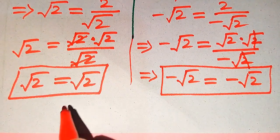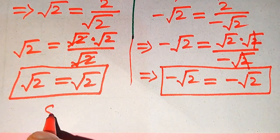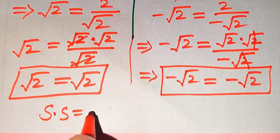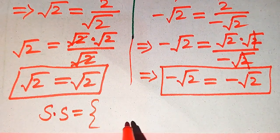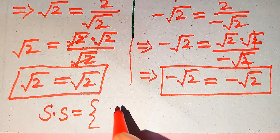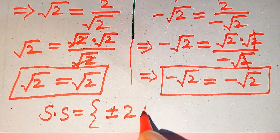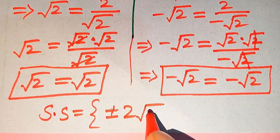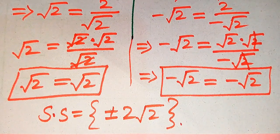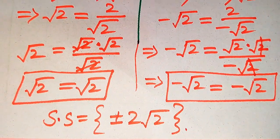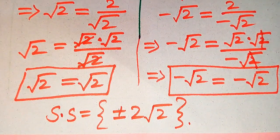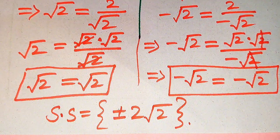Our final conclusion is that the solution set is plus or minus 2 times the square root of 2. This is our solution set and the final answer. Thank you so much for watching this video — please subscribe to my channel for more exciting videos.